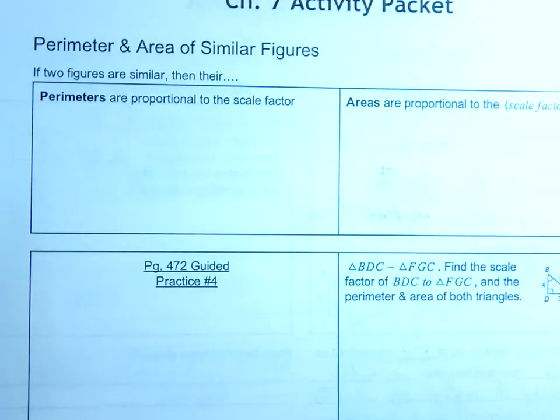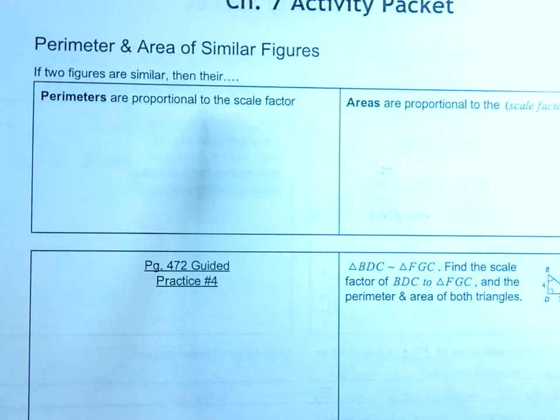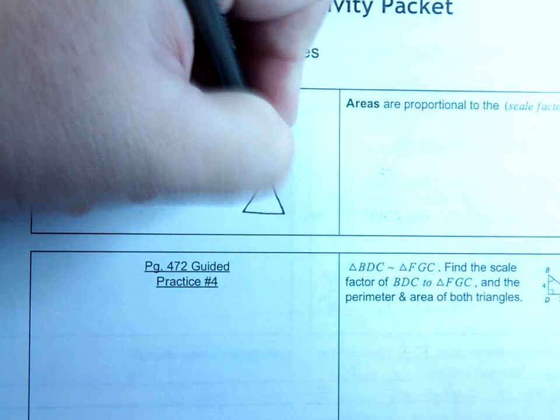The first fact: if two figures are similar, then their perimeters are proportional to the scale factor. What does that mean? Well, it means that if I have two shapes and they are similar...